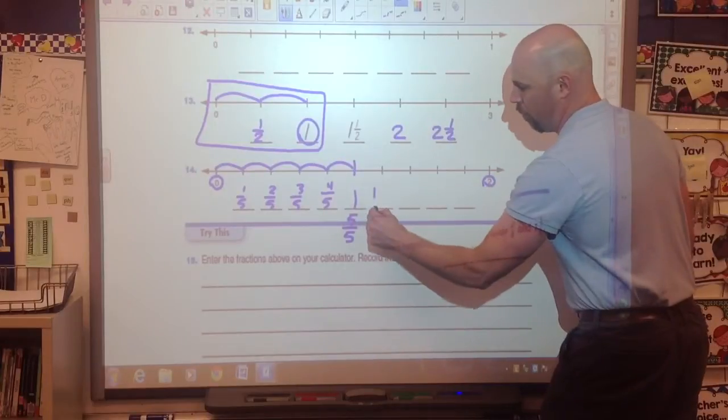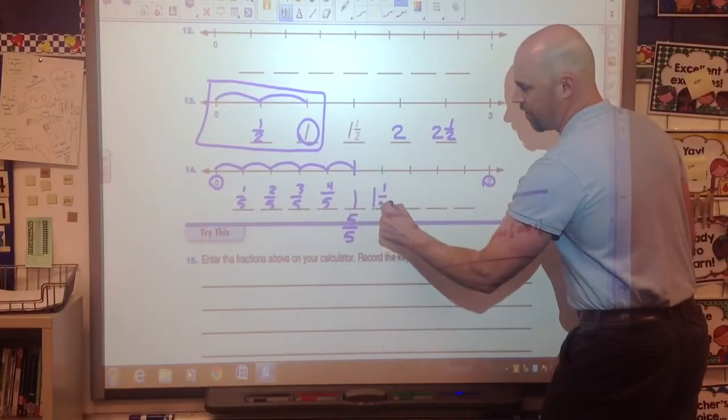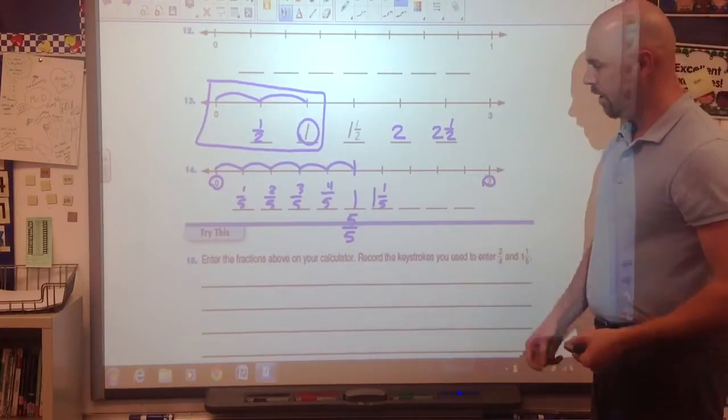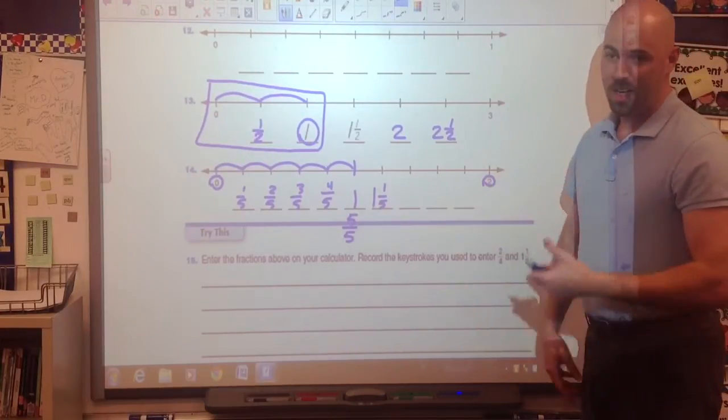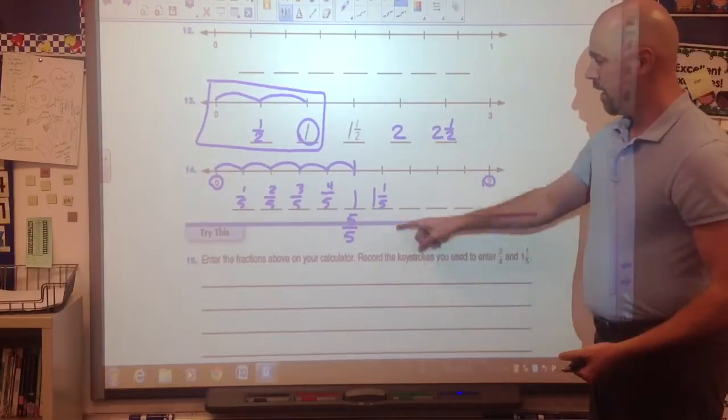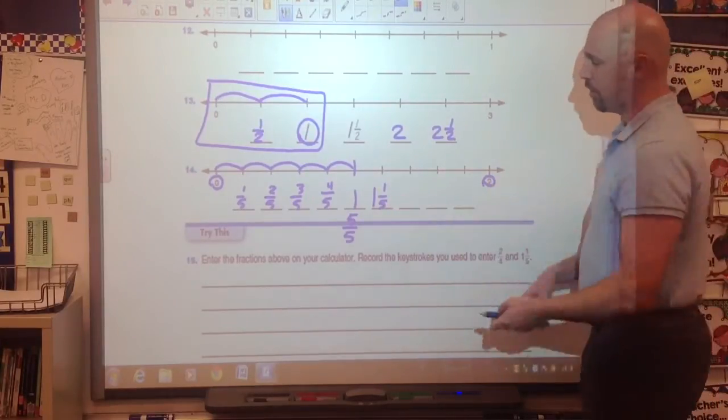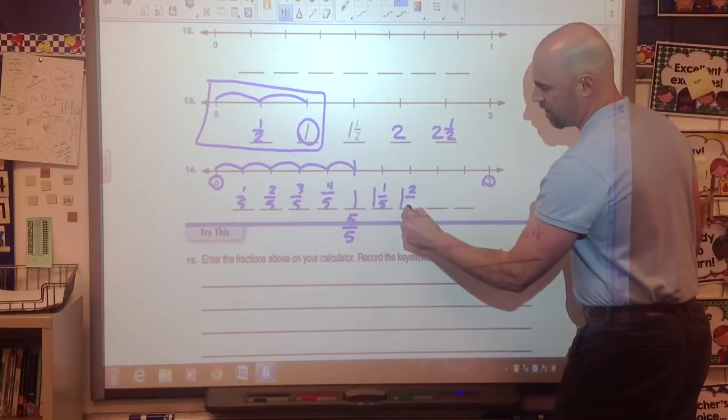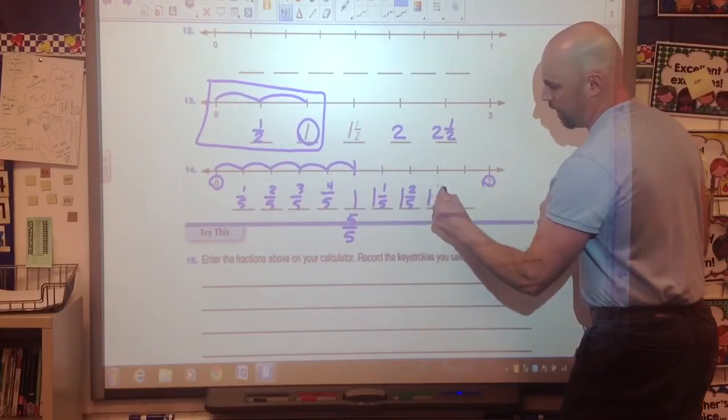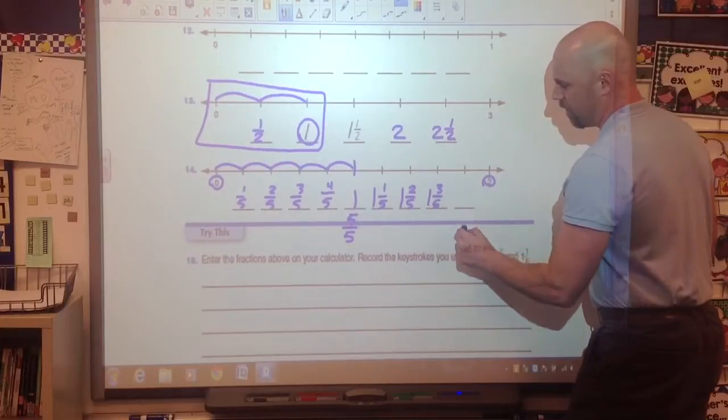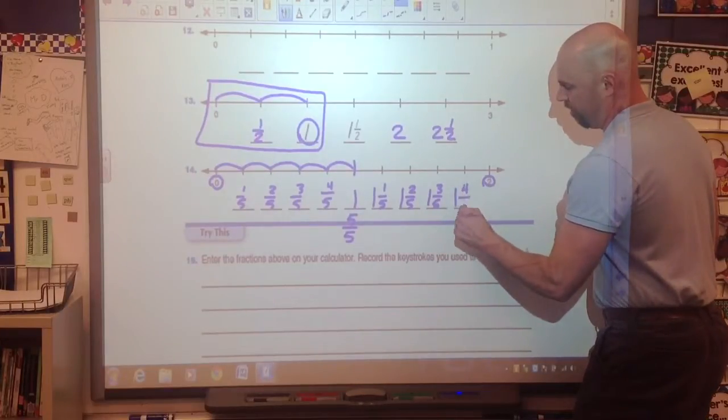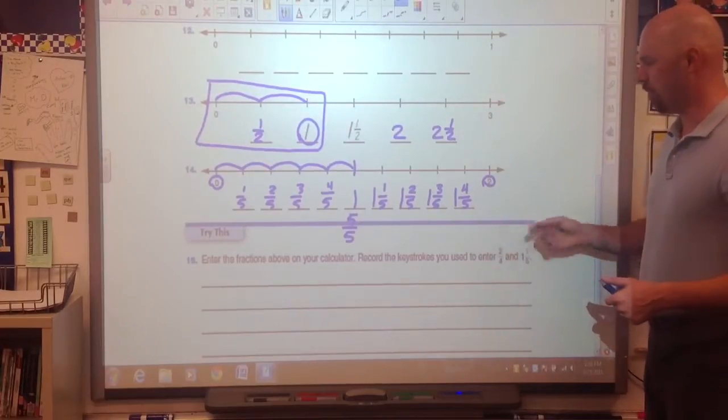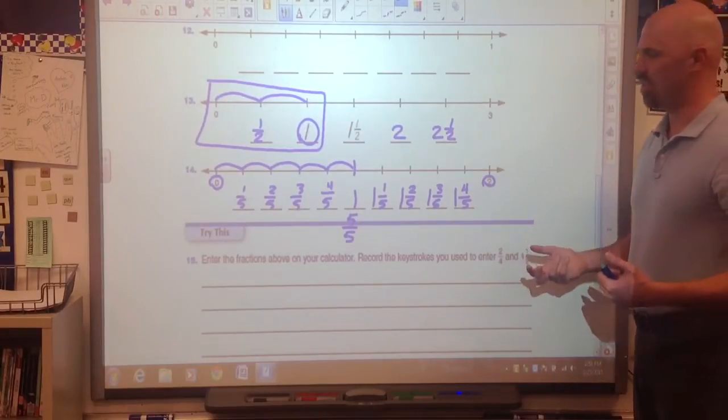Now we have one and one-fifth, and we start talking about that's what we call a mixed number. It's a whole number and a fraction put together. So I didn't just eat one whole pizza. I ate one whole pizza and I ate a piece off of somebody else's pizza too. So I ate a lot that day. Now I've got one and two-fifths, one and three-fifths, one and four-fifths, and then one and five-fifths is the same thing as two. And that's where we're at. One and five-fifths is two.